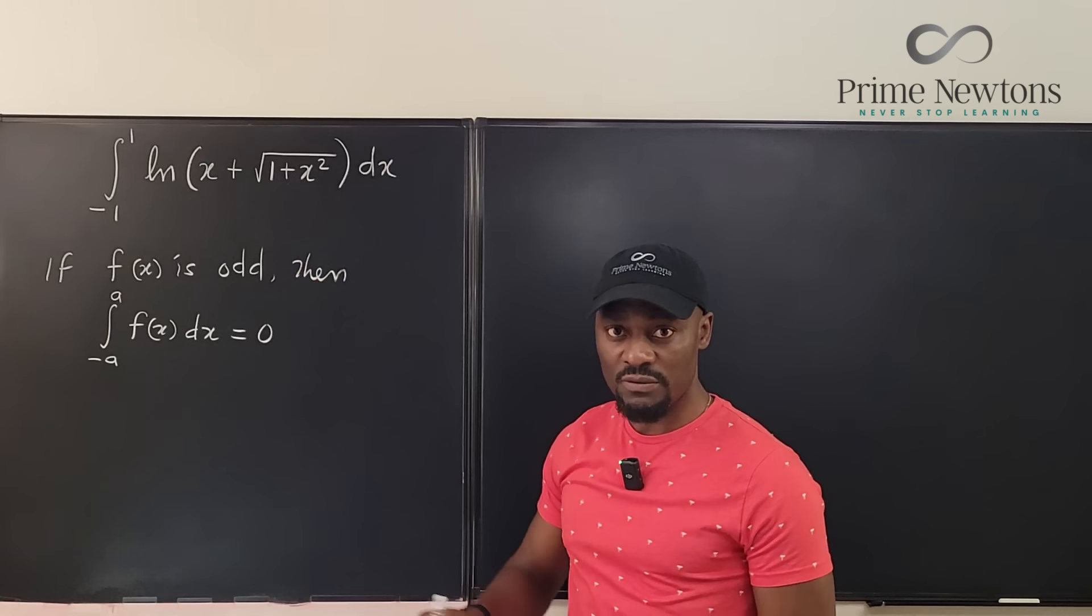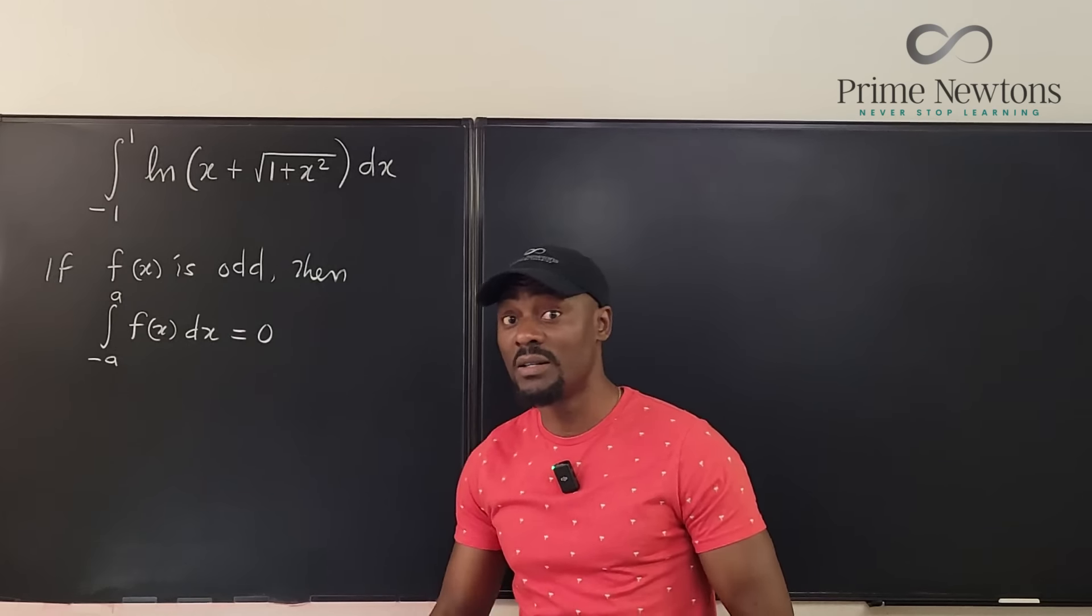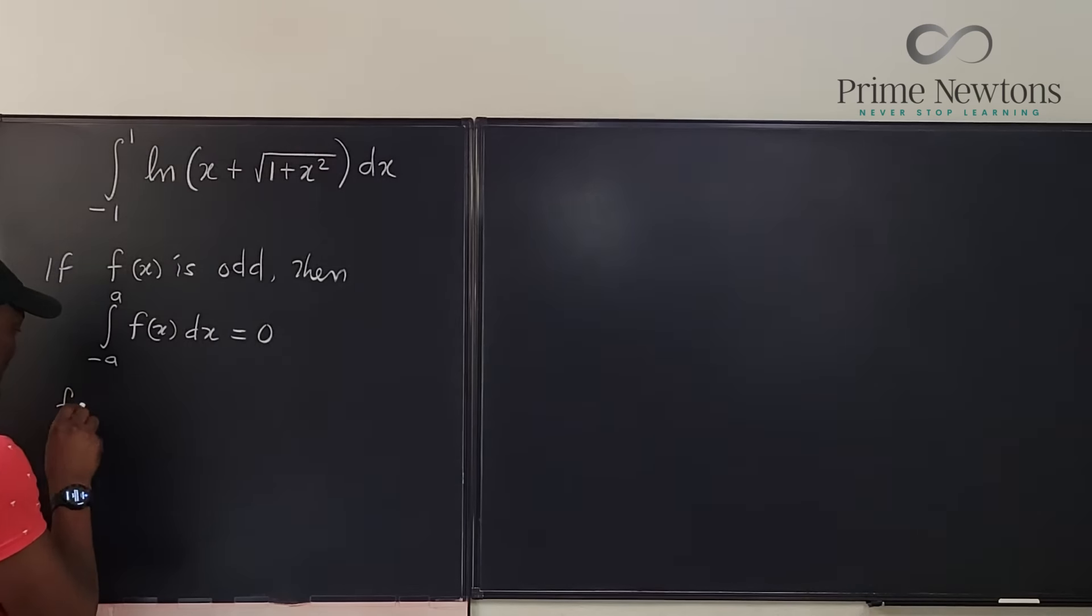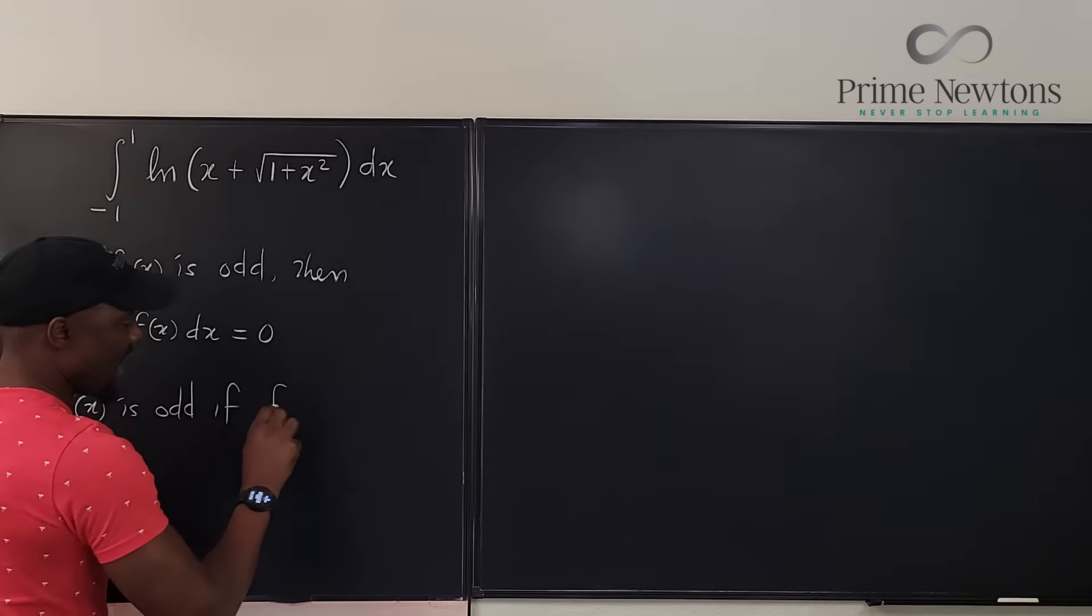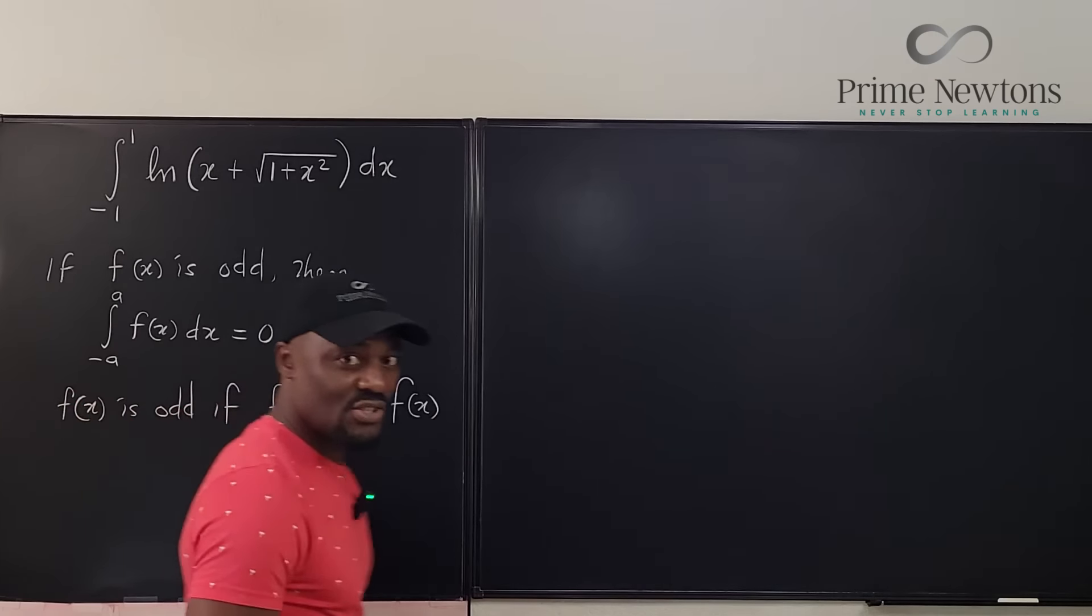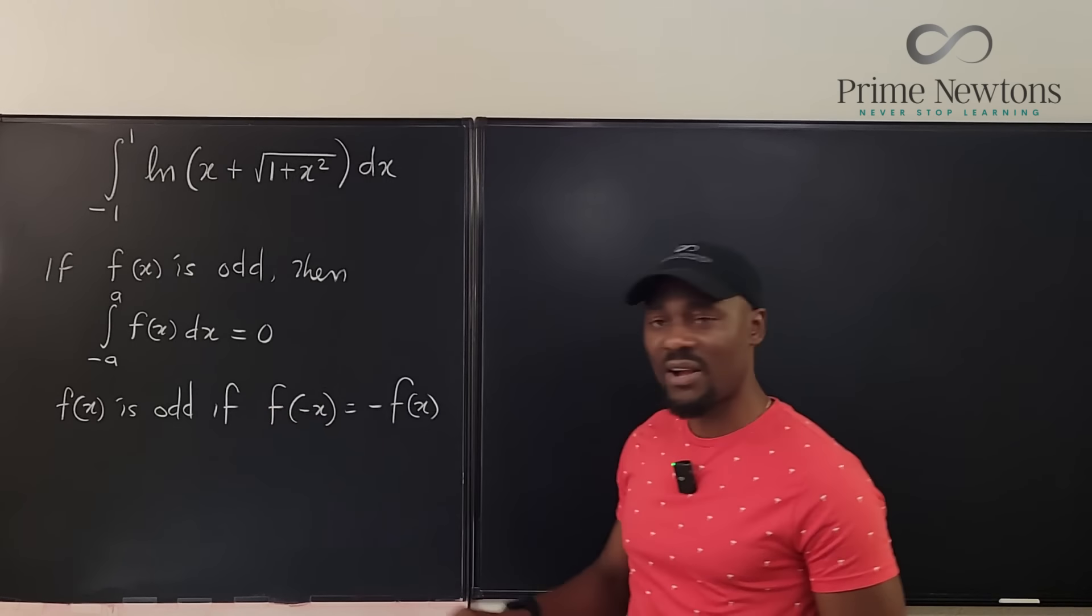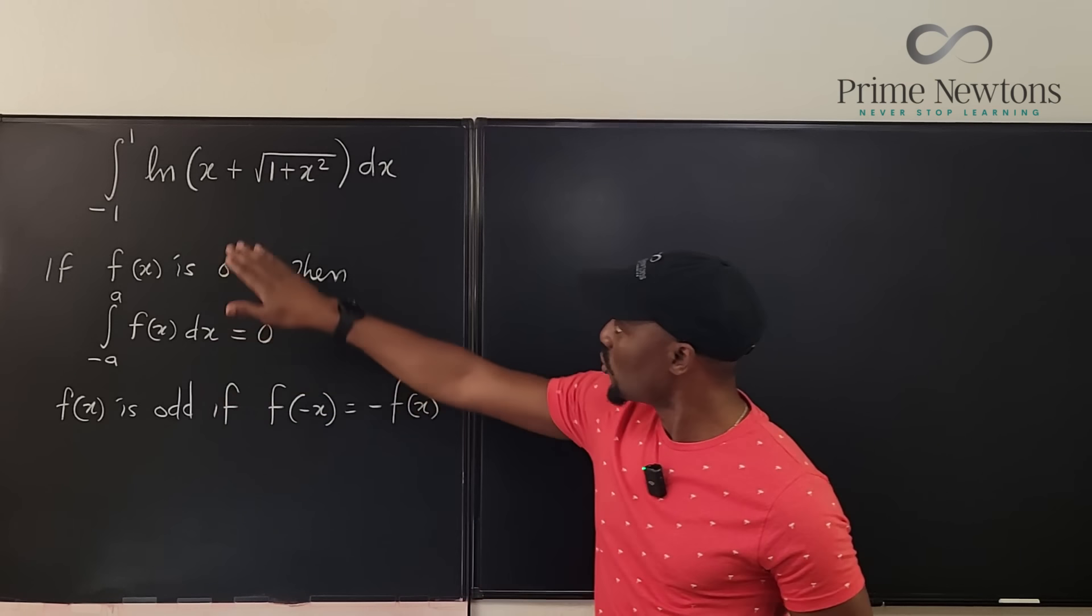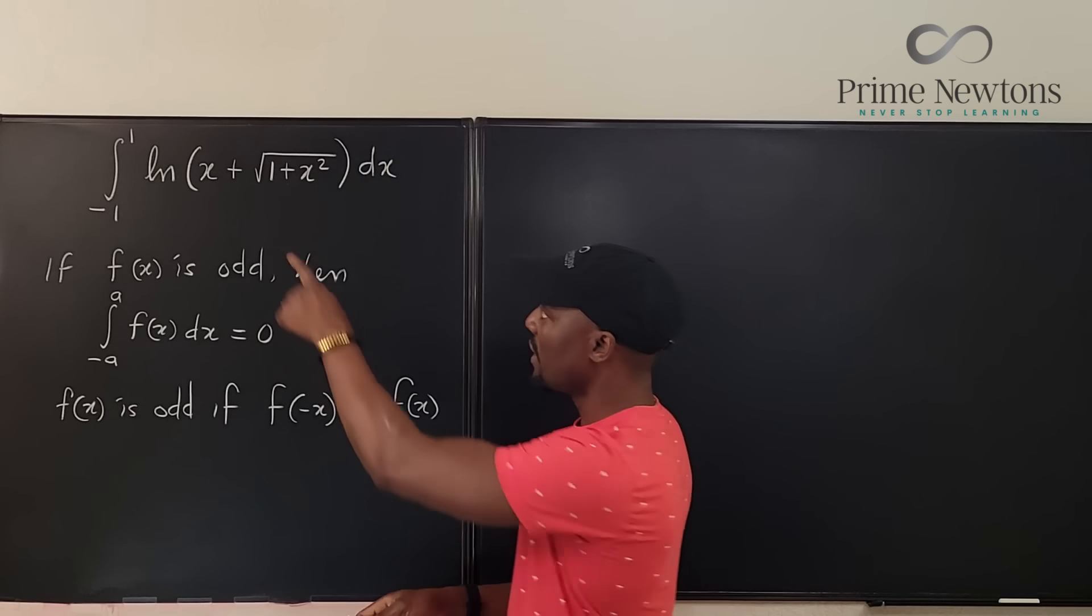And if you go back to your algebra days, you remember how you know whether a function is odd or even. We said that f of x is odd if f of negative x is negative f of x. That is, if you can pull the minus sign from inside the argument to the back of the function, then it's an odd function. So we're going to try to do that here.